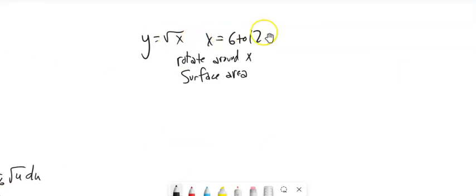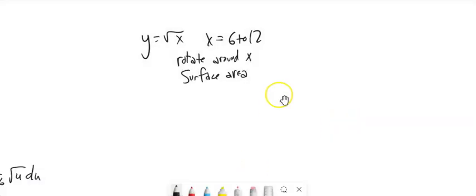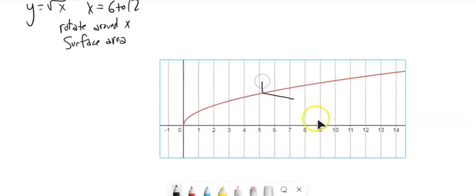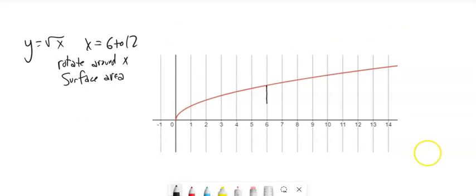So we've got our function. We've got our range. We know we're going to rotate around x. And we want surface area. So I'm going to grab a Desmos graph of this. There it is. So 6 to 12. Rotate it around the x-axis. Looks something like that.